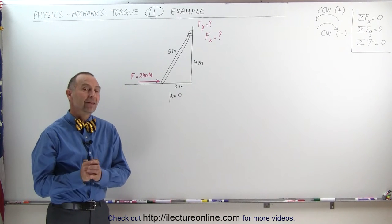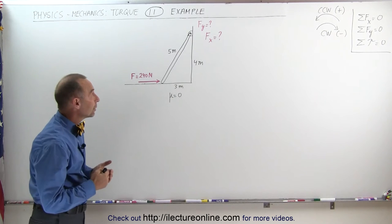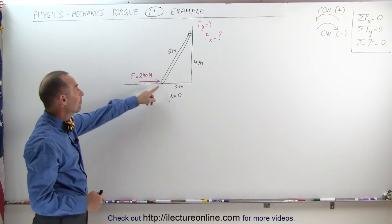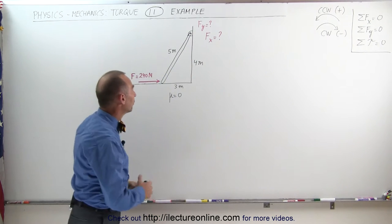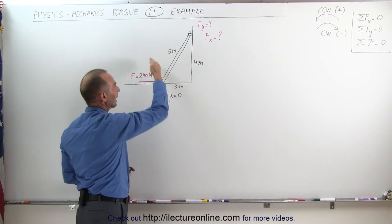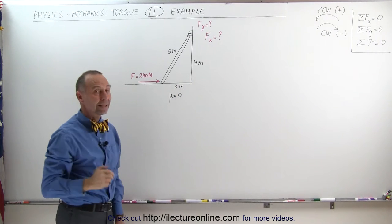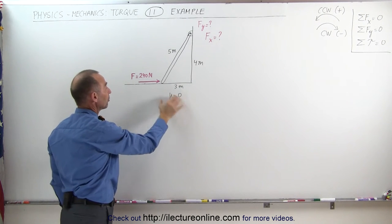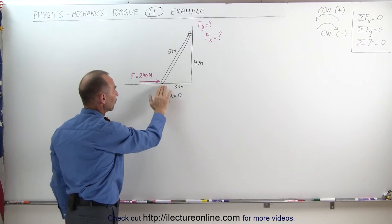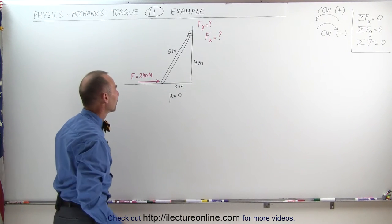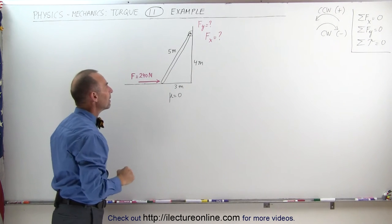Welcome to our lecture online. This is a classic example dealing with torques. We have a beam connected to the wall at a height of four meters. The beam itself is five meters long and it touches the ground at a distance of three meters from the wall. The coefficient of friction between the floor and the beam is equal to zero, so there's no friction force at the bottom. We have a force of 240 newtons pushing to the right at the bottom of the beam.